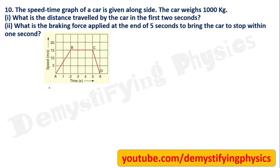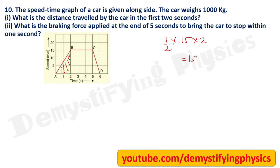In a speed-time graph we get two things: acceleration from the slope and distance from the area under the graph. To find distance traveled in the first 2 seconds, calculate the area, which is a right triangle: ½ × base × height = ½ × 2 × 15 = 15 meters.